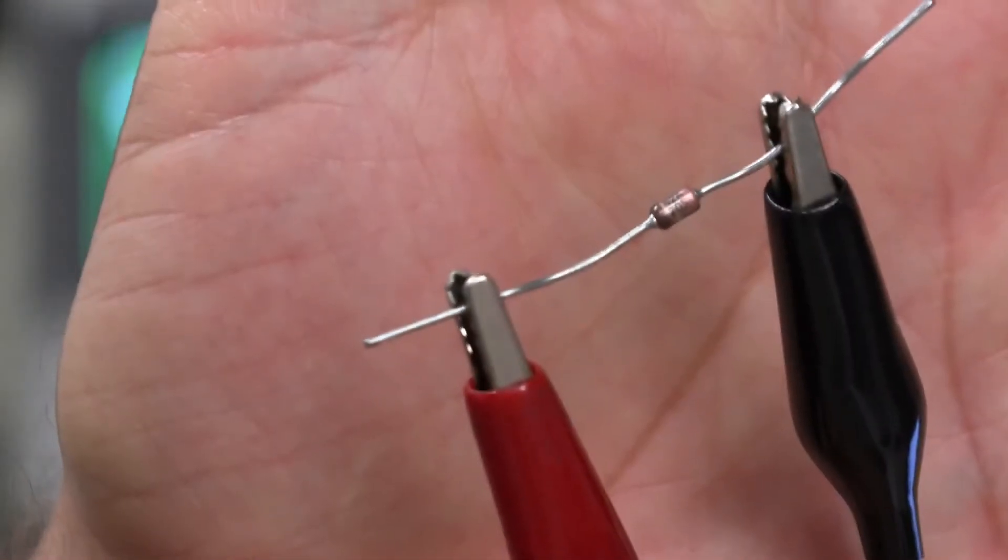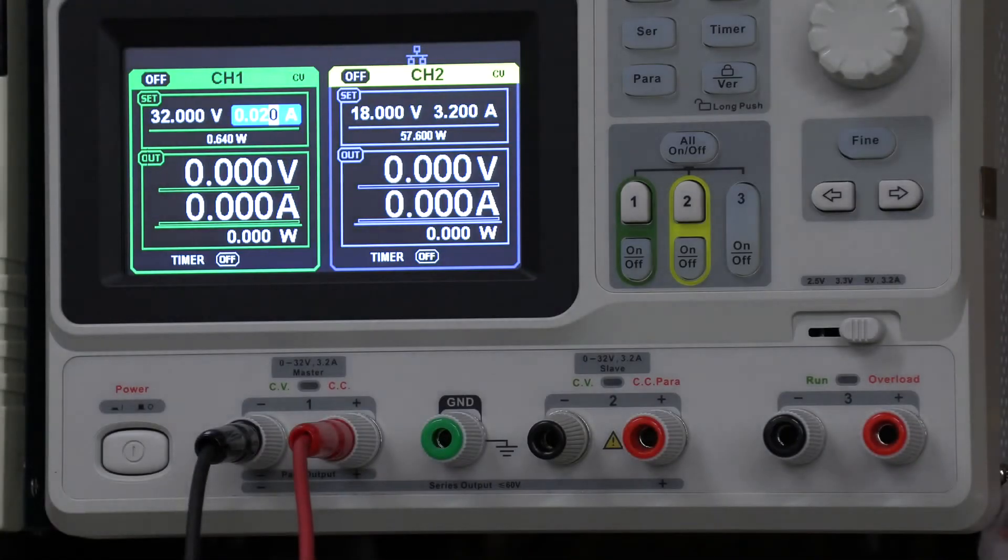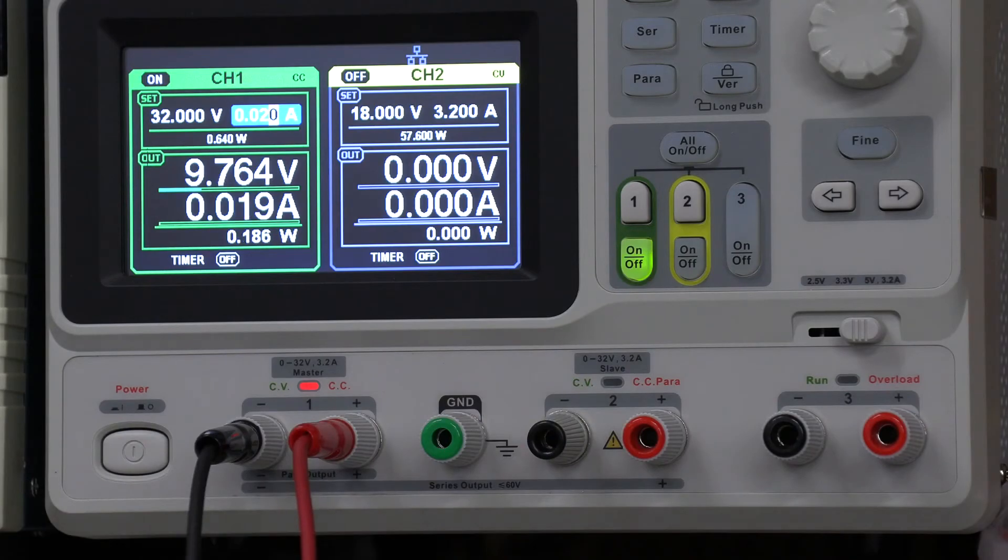Get the camera to focus on my hand. There we are. And I'm just going to turn the channel on. Watch the voltage climb up there. Oh, it looks like that's a 12.1 volt Zener.